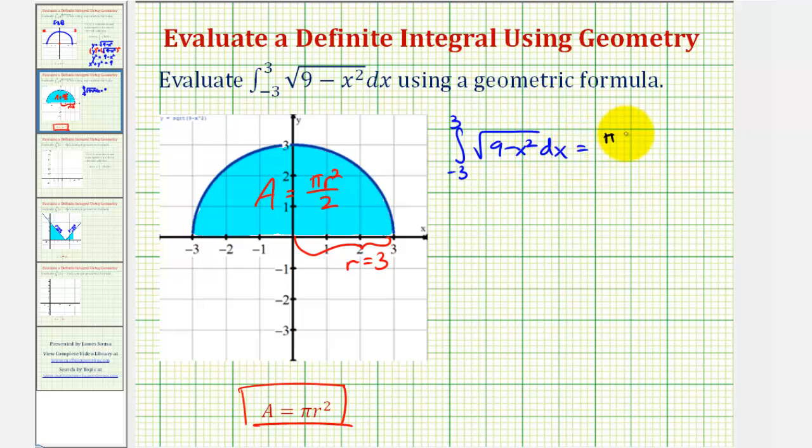is equal to pi times r squared, or three squared, divided by two, which is nine pi divided by two square units. I hope you found this helpful.